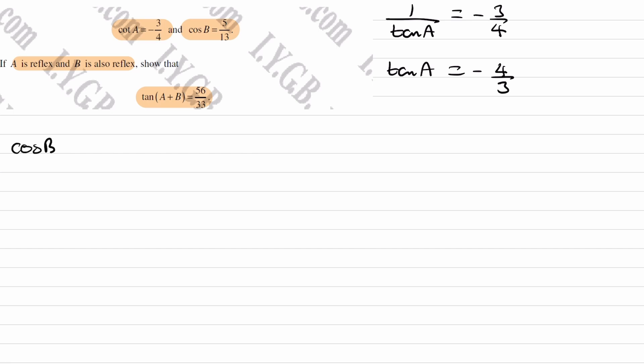And then we're told cos B is 5 over 13. We're trying to show that tan(A + B) is equal to 56 over 33.